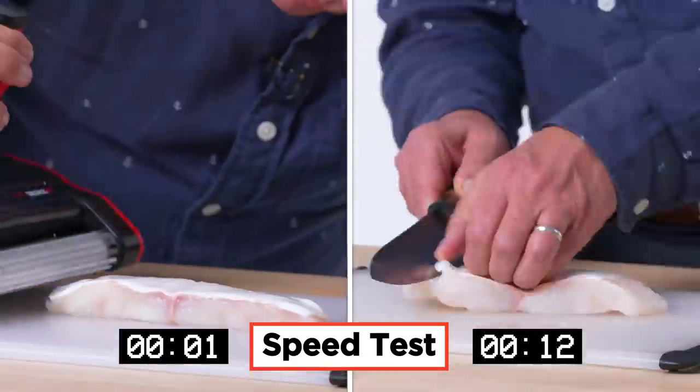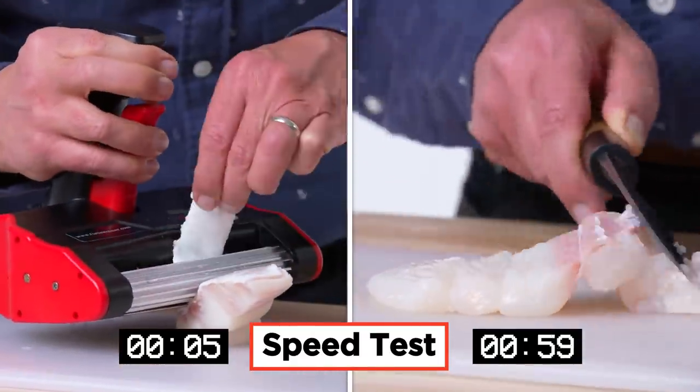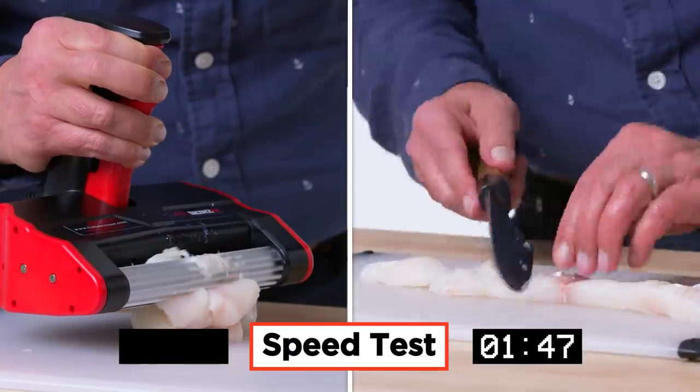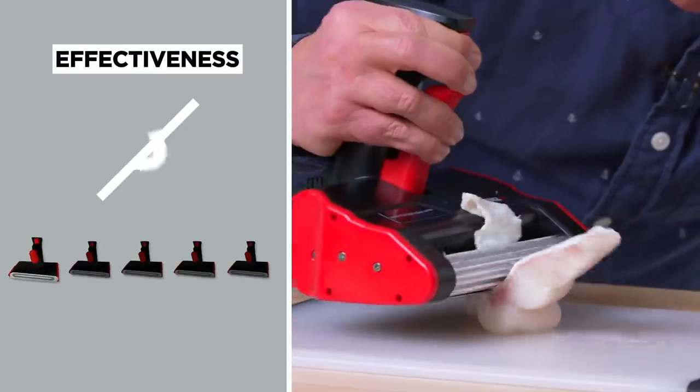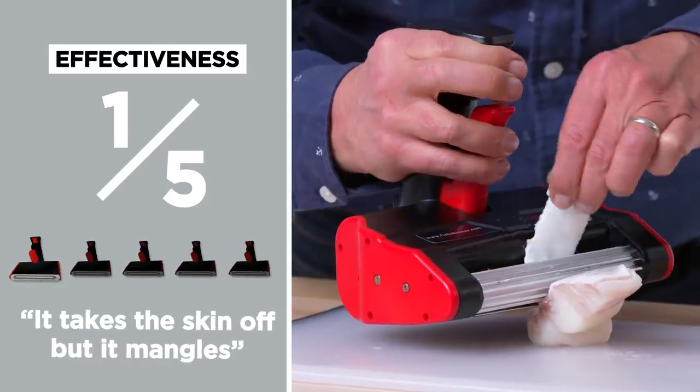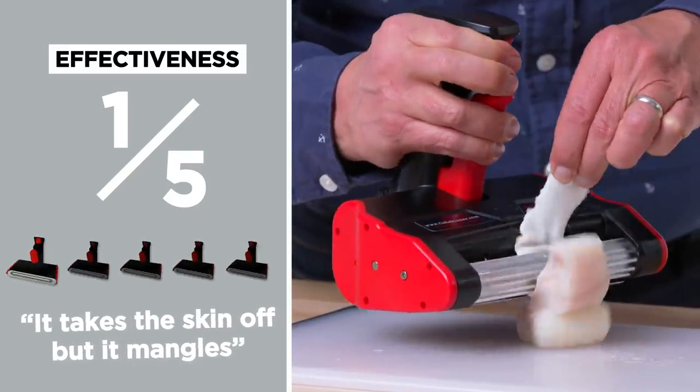There may be a technique to this, but I am certainly not getting this on the first couple of tries. Let's assume you don't have an electric fish skinner. Let's see what it's like with a standard chef's knife. On a scale from one to five in terms of effectiveness, I would give this a one. It takes the skin off, but it mangles.